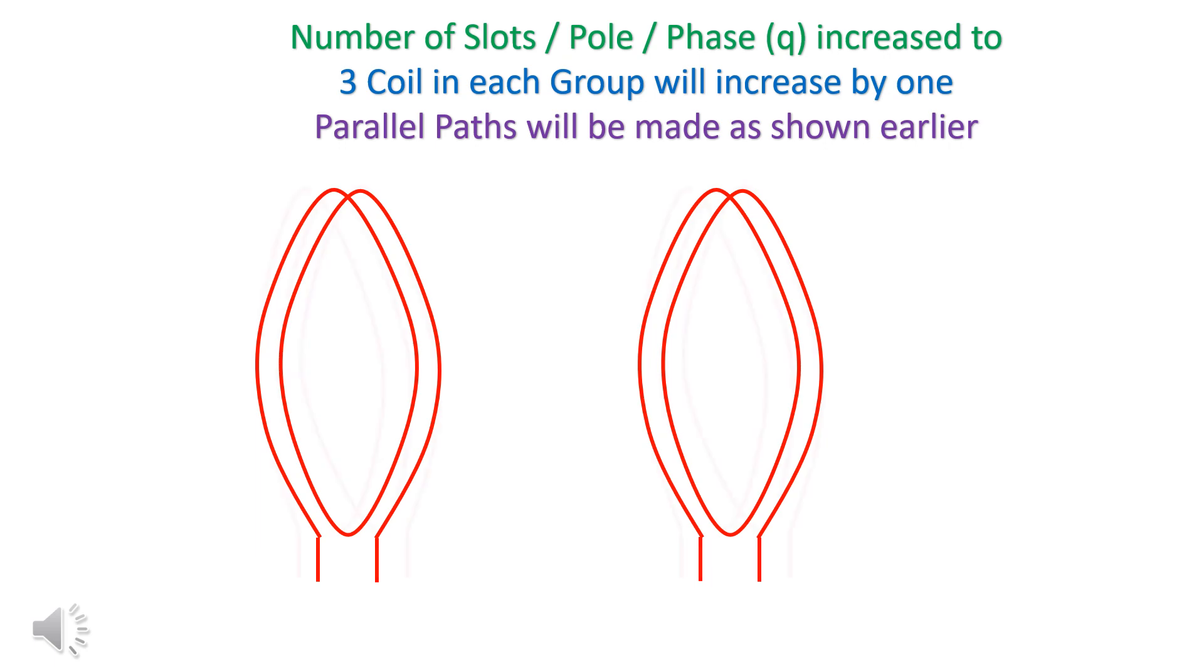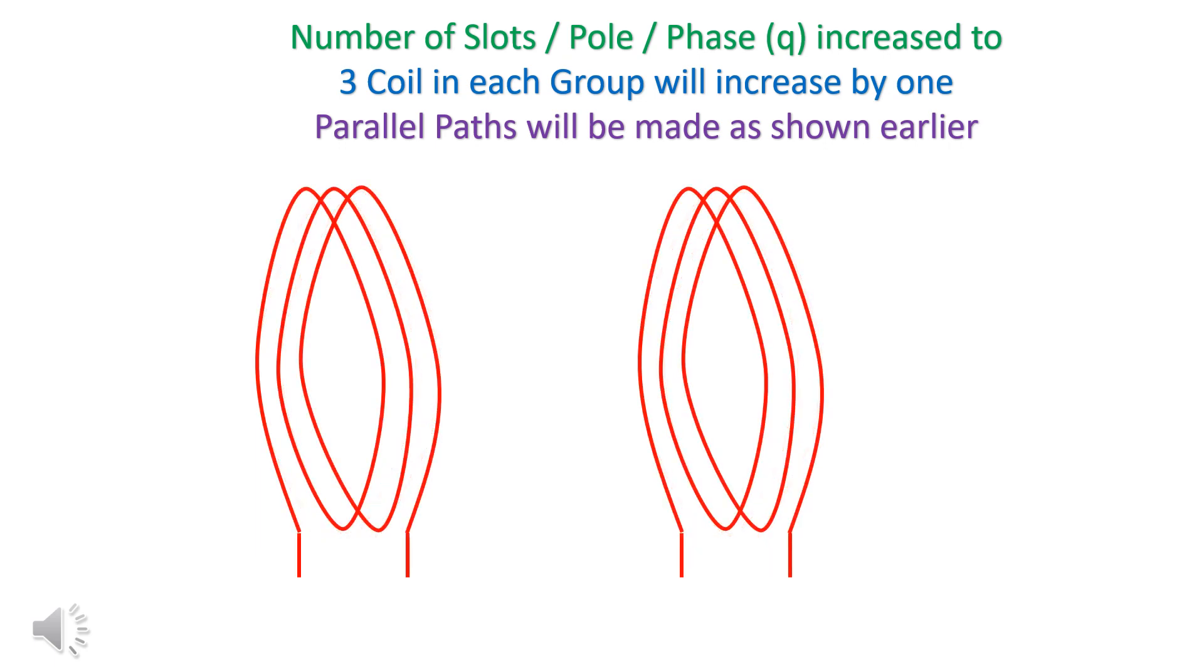The number of slots per pole per phase, that is Q, is increased to 3. Parallel paths will be made as shown earlier.